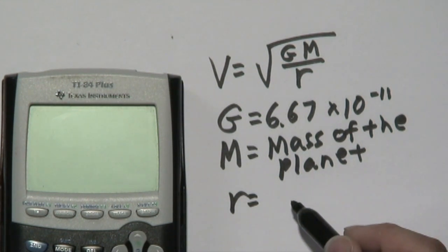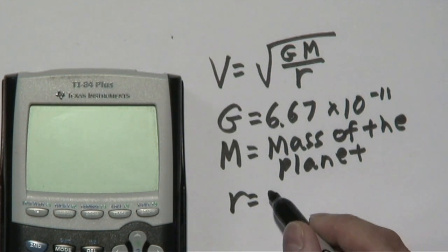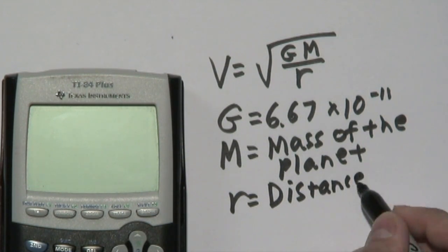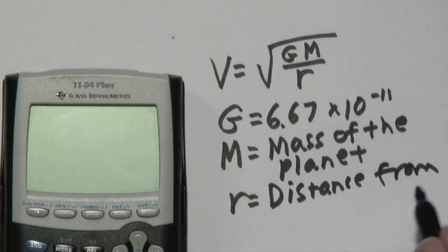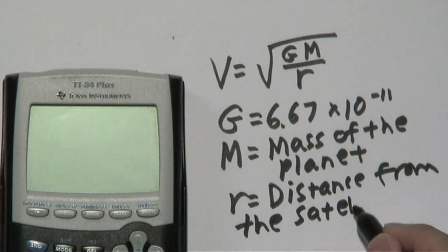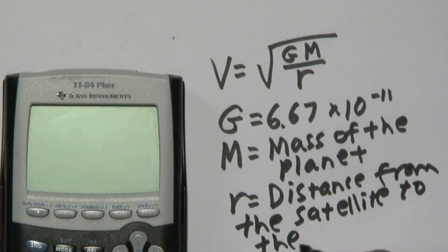Now r, you might think is the radius. It is related to the radius, but here's the actual definition of what r actually is: r is the distance from the satellite to the center of the planet.